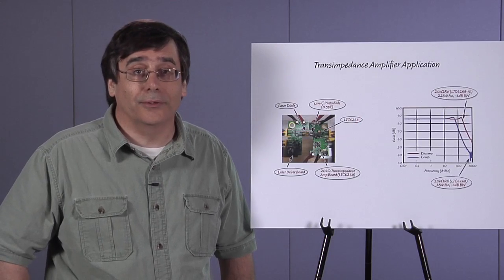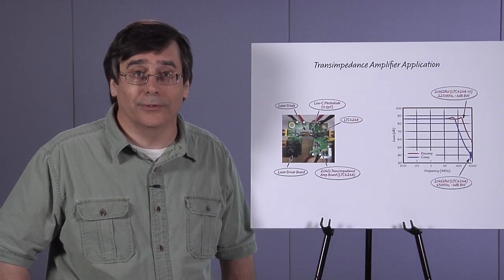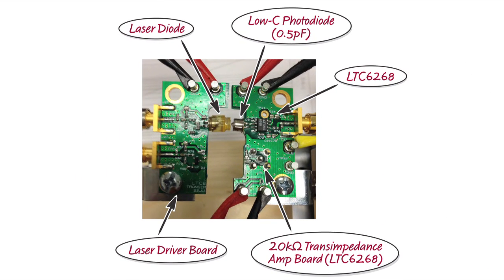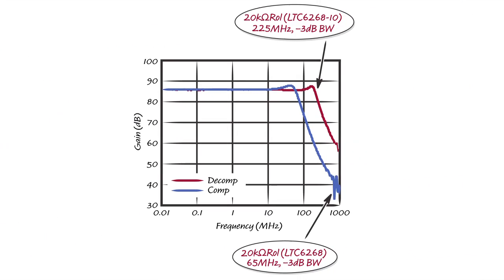Another good application for the LTC6268 is transimpedance amplifiers. Here's an example of a laser-driven photodiode transimpedance circuit we set up in our lab. We offer a decompensated version of the LTC6268 designed specifically for this kind of circuit named the LTC6268-10. The extended bandwidth of this version combined with the low input capacitance of 0.45 pF yields remarkable performance. Our example has a gain of 20k and shows a measured bandwidth of 225 MHz for the decomp version. Our standard version is good for 65 MHz in the same application.